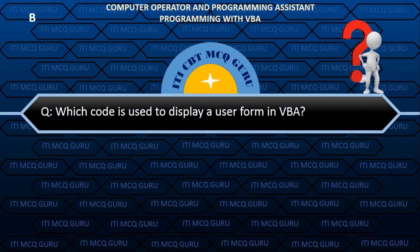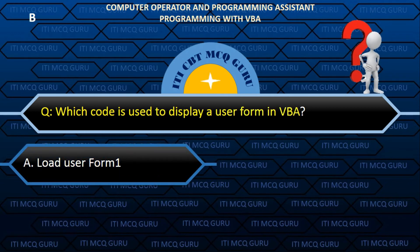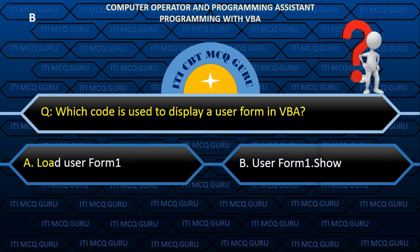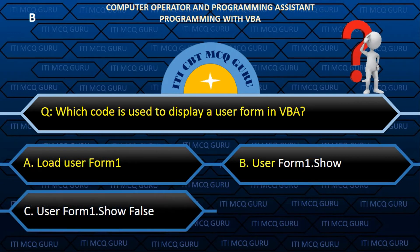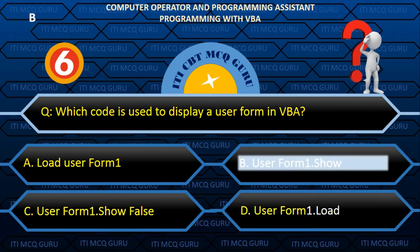Which shortcut key is used to display a user form in VBA? Answer: B. UserForm1.Show.